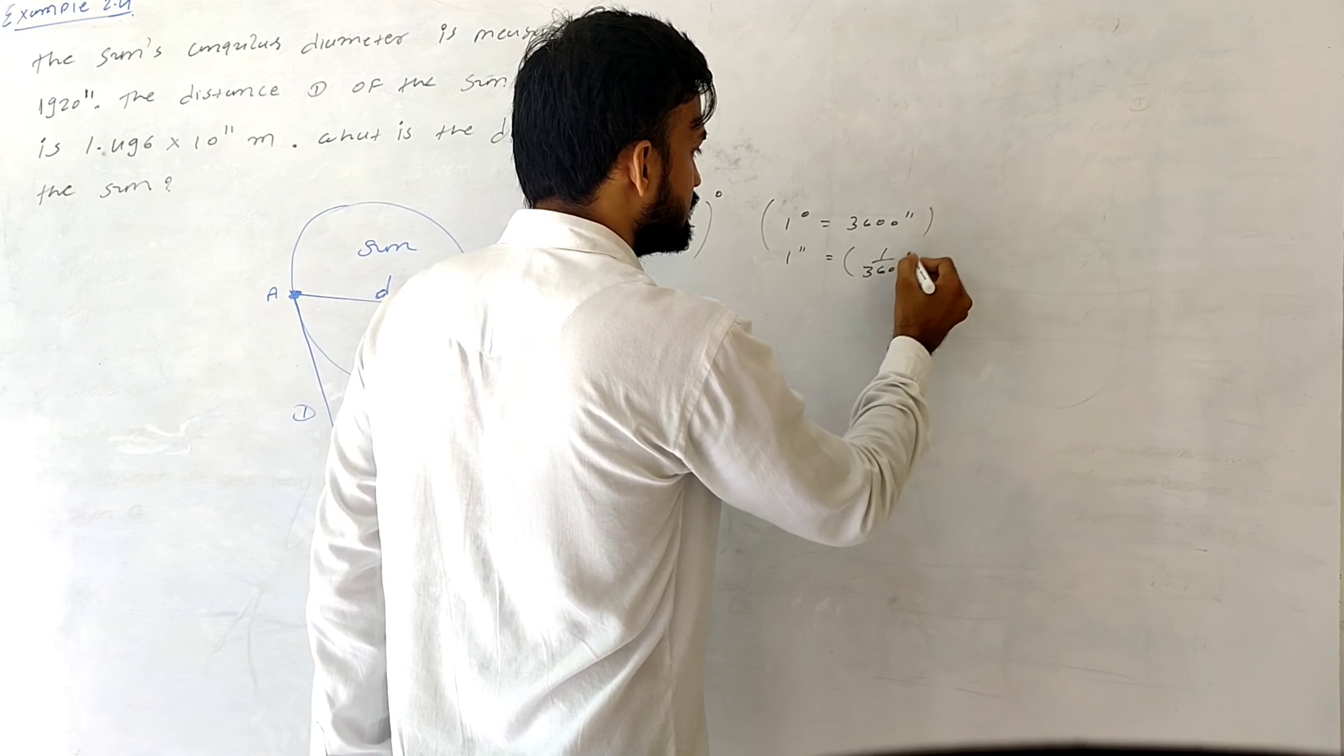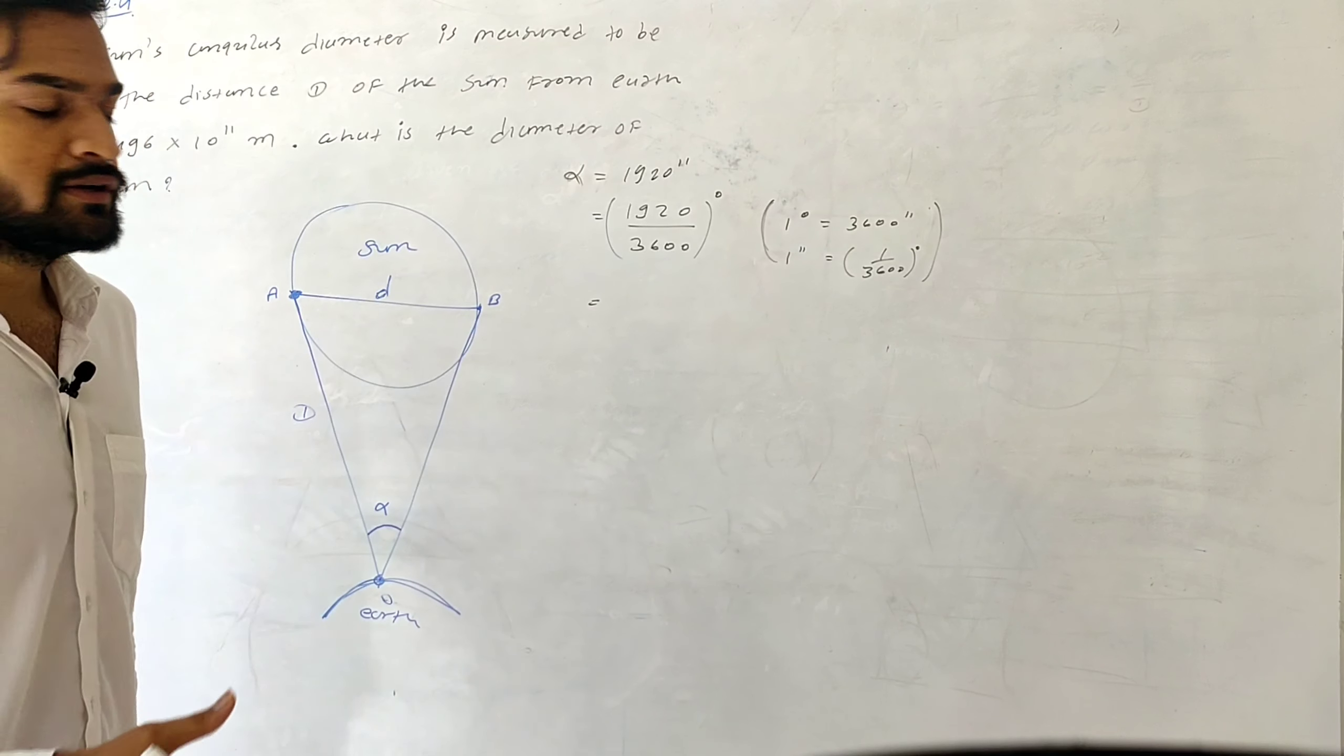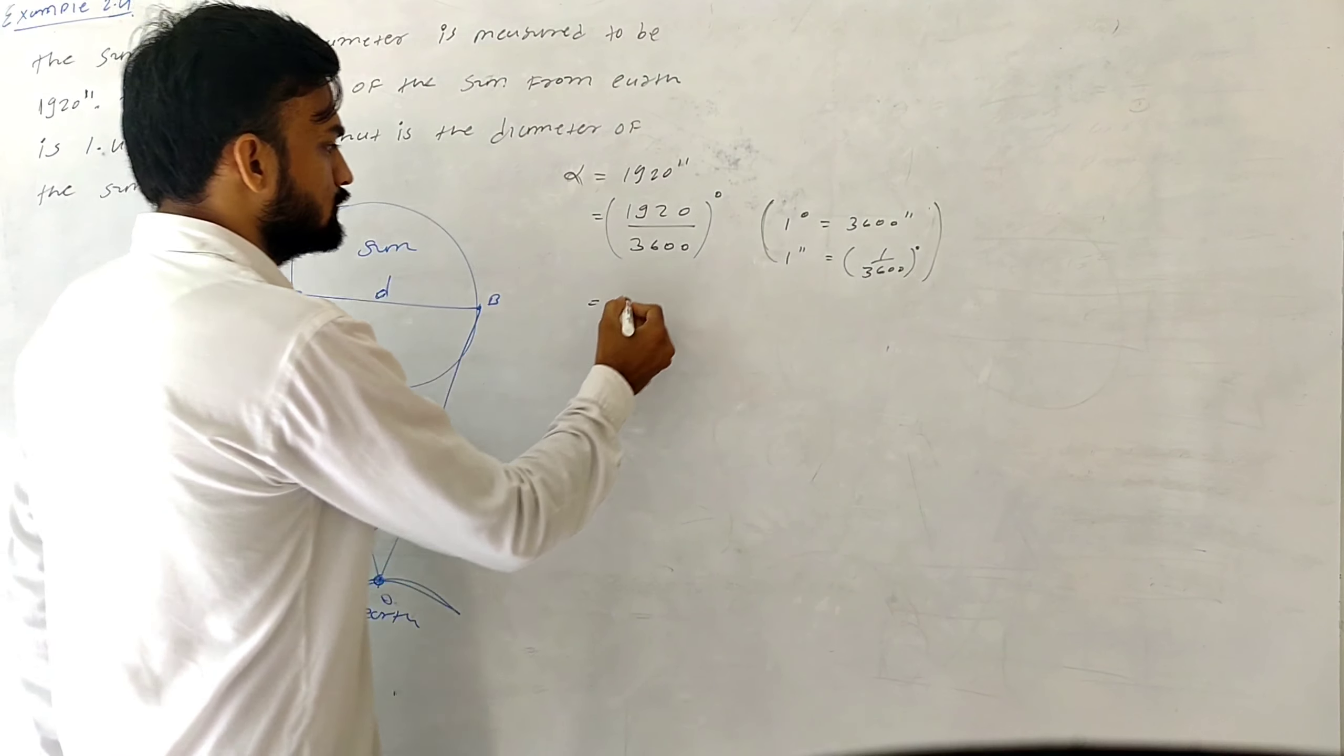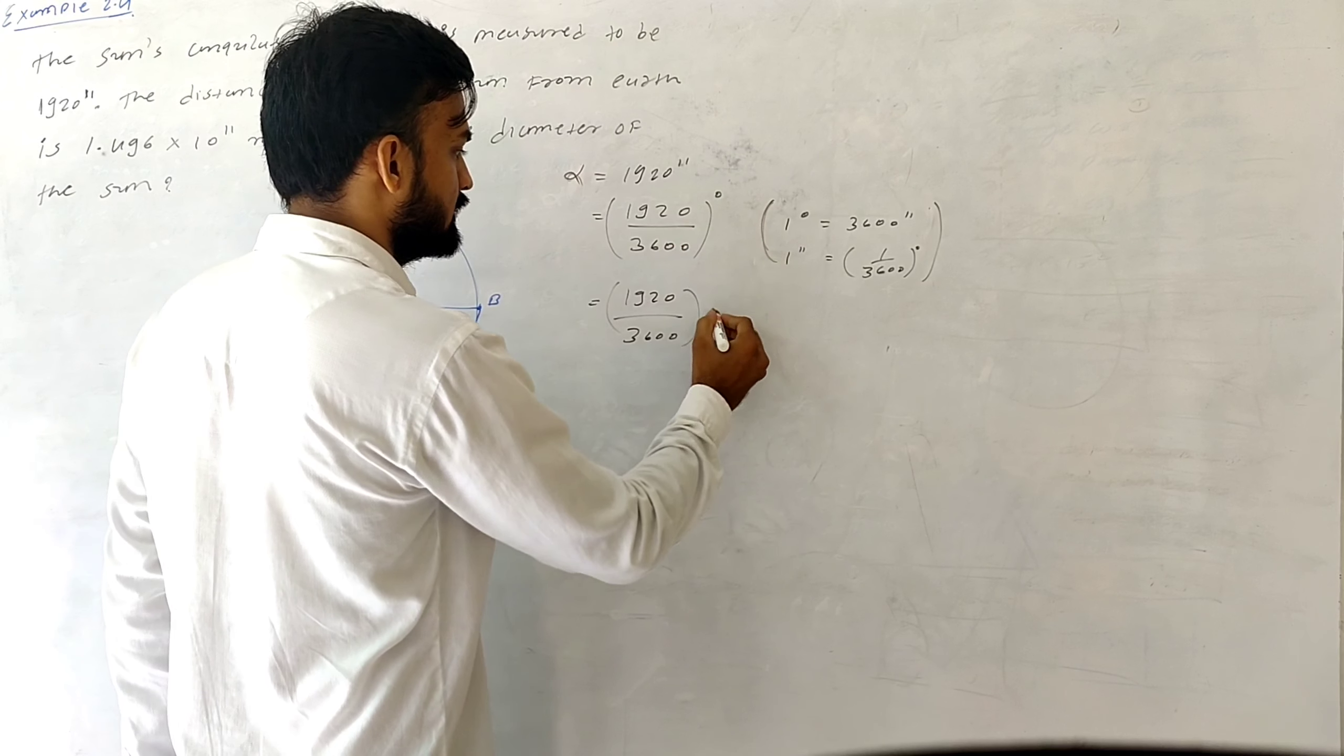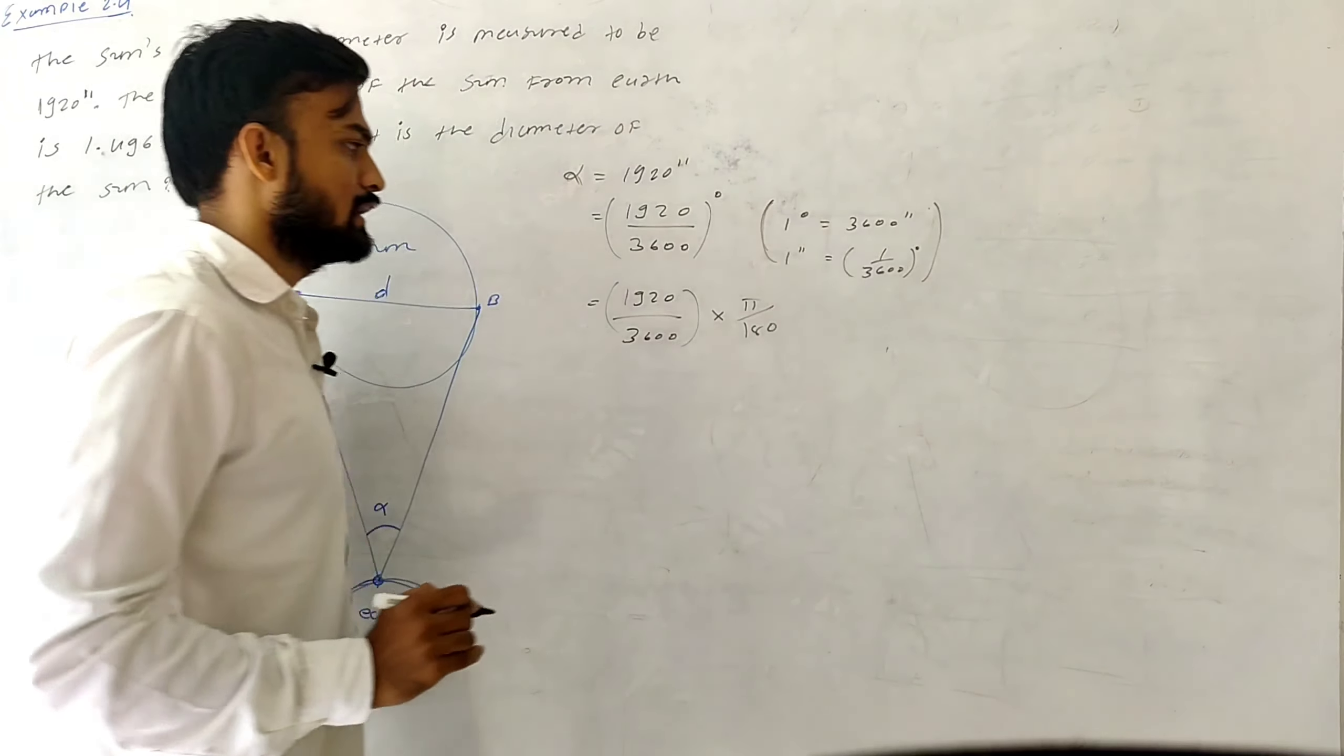So one second is equal to 1/3600 degrees. Now to convert degrees to radians, we multiply by π/180. So here I am dividing this term by 3600 first so it is in degrees, and after that I am multiplying it by π/180, so this full term is now in radians.